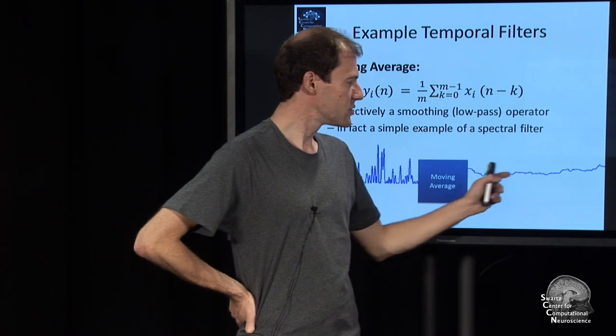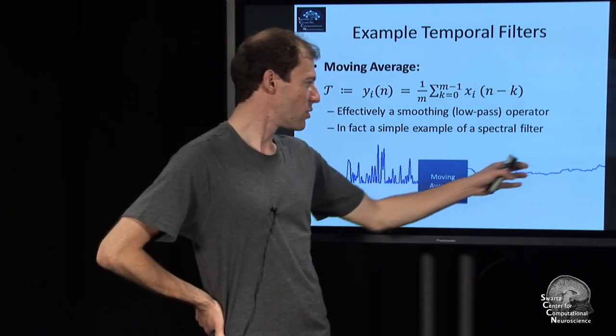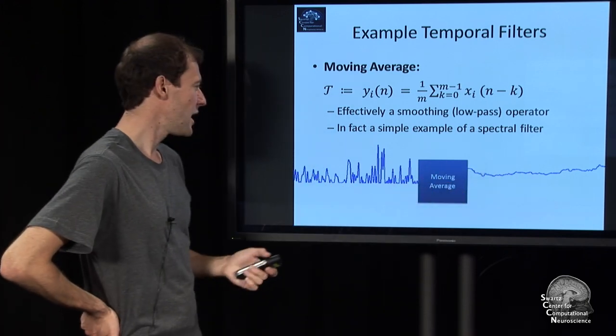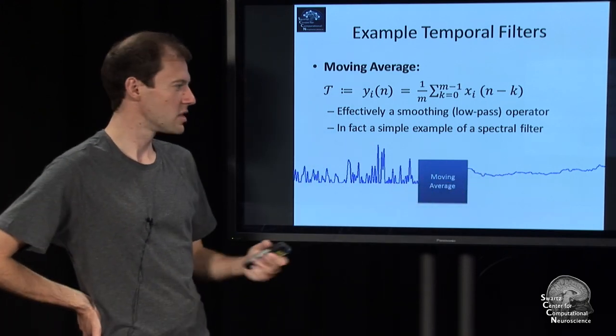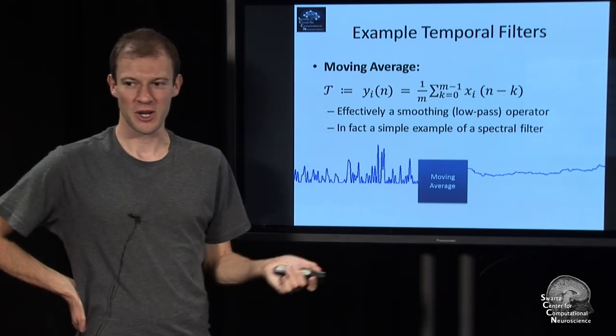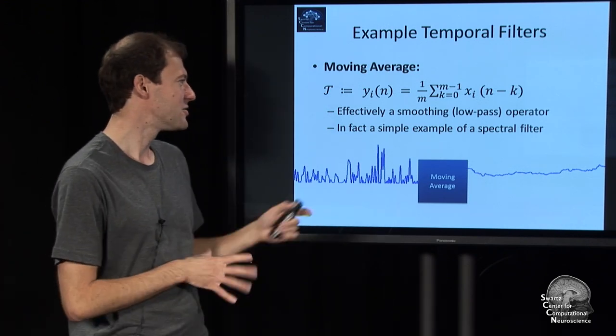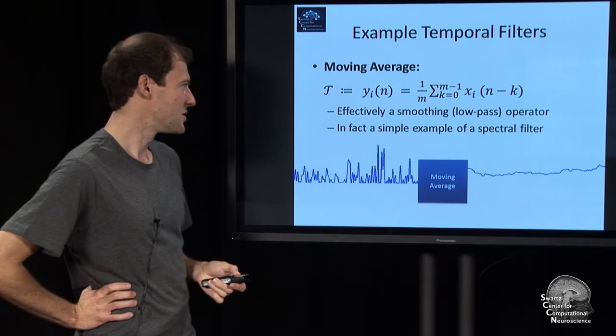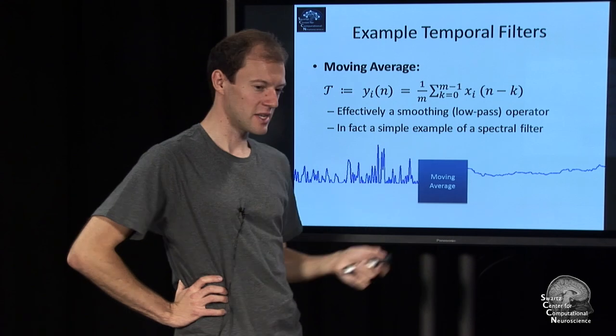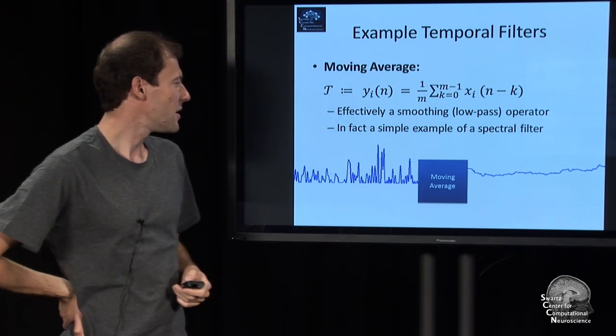If you apply that, you see it basically gives you a smoothing. So in a sense, it only leaves the low frequency components in the signal, and it removes high frequency components, fast changes. In a sense, this is actually also a spectral filter. It operates on the spectrum. It's a very basic one. It's very hard to control what frequencies it retains and which ones it removes.